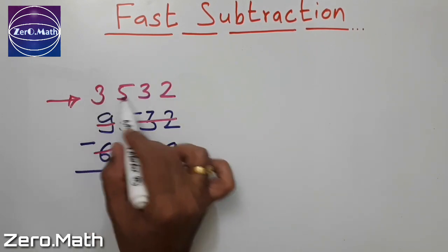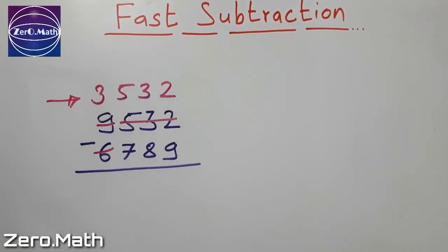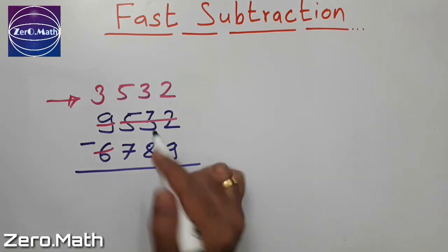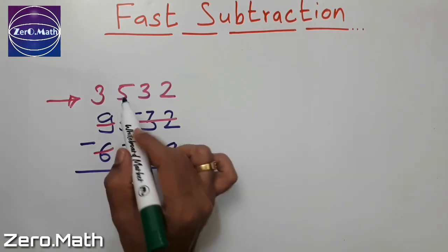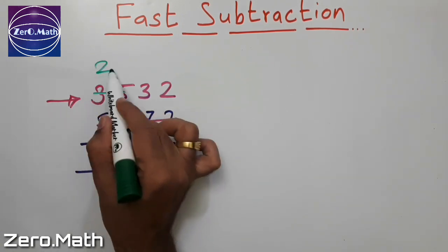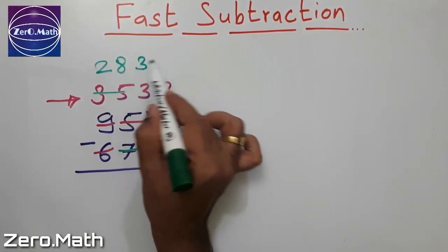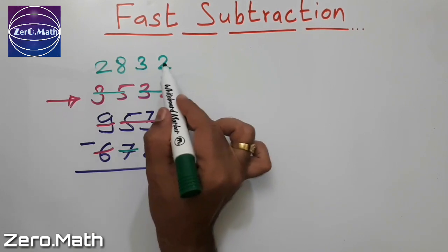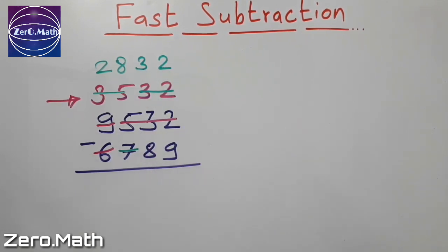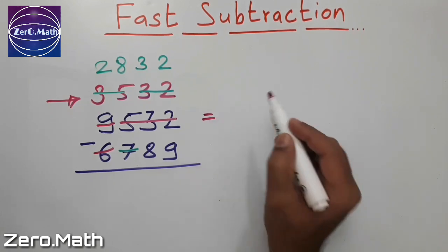Now my problem statement has become 3532 minus 789. Again subtract the 7 from 35, which will be 28, and this 32 I will write as it is. So 2832 minus 89 is my problem statement now.